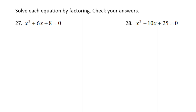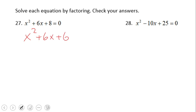It's going to work for some quadratic equations, so let's take a look at number 27. We have the quadratic equation x² + 6x + 8 = 0. Basically what we need to do first is to factor out this trinomial, and we're looking for two numbers whose product is 8 and whose sum is 6.